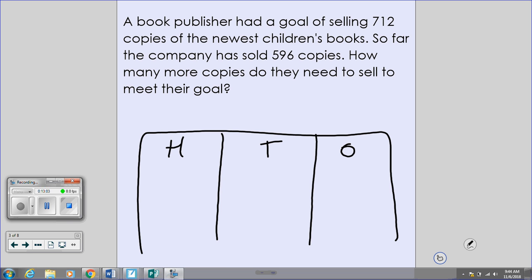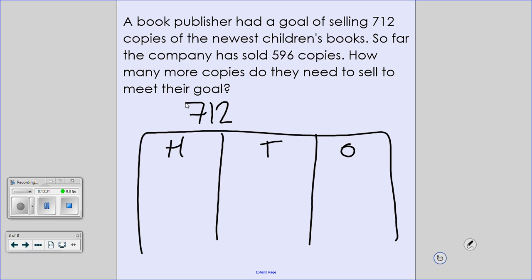What is their total book selling goal that they want? The total number of books they want to sell is 712. That is our whole number. That is the total. That's what they want to sell. Did they sell the total number? No. No, they sold part of the number that they wanted to. How much did they actually sell? Five hundred and ninety-six. And that, as a subtraction problem, is going to give us how many more they need to sell.